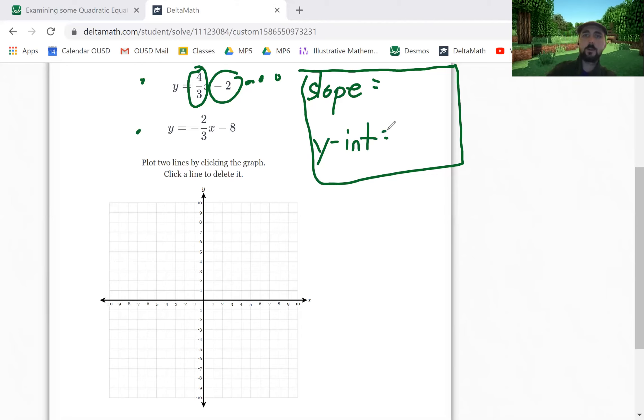The slope in this case is 4 over 3, and the y-intercept comes from the number at the end, which is zero comma negative two. A little laggy? Yeah, okay, that's pretty standard for this kind of software.